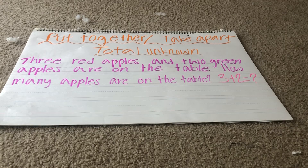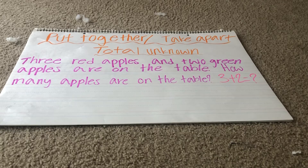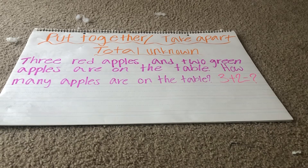So we've got: three red apples and two green apples are on the table. How many apples are on the table? We've got three plus two equals question mark.